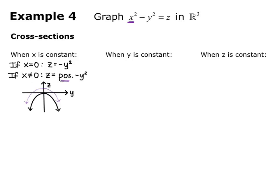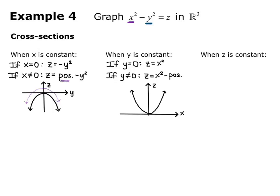When y is constant and y equals 0, we get z equals x squared — a right-side-up parabola. Since y squared is always greater than or equal to 0, when y is not equal to 0, z equals x squared minus a positive number, which shifts the parabola down. So we have a right-side-up parabola through the origin when y equals 0, and parabolas shifted down when y is nonzero.